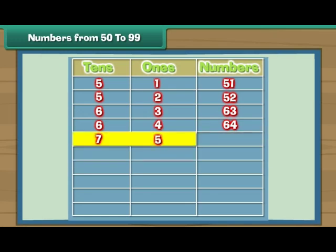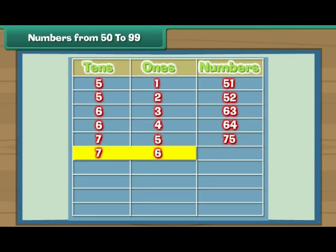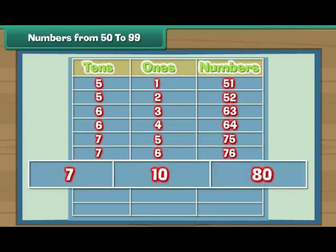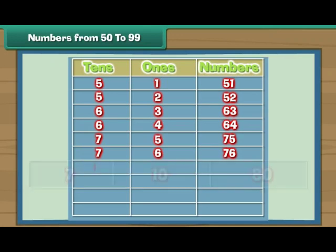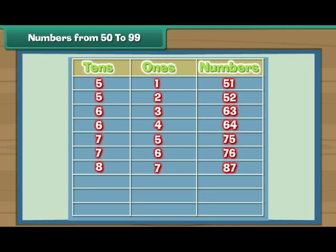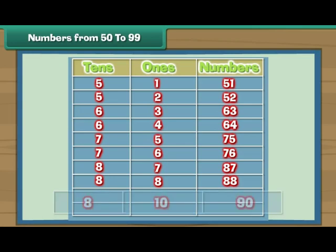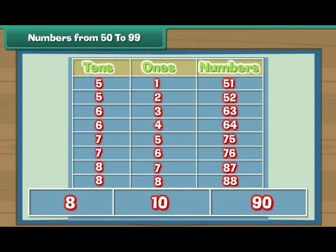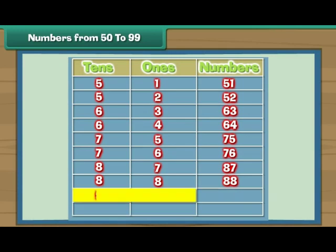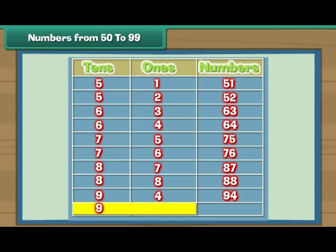Seven tens and five is 75. Seven tens and six is 76. Seven tens and ten is 80. Eight tens and seven is 87. Eight tens and eight is 88. Eight tens and ten is 90. Nine tens and four is 94. Nine tens and nine is 99.